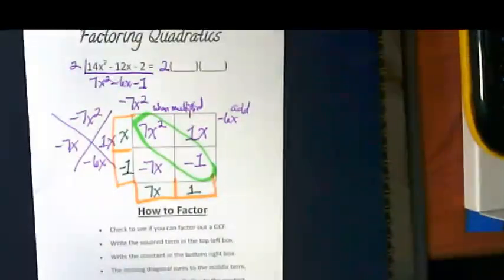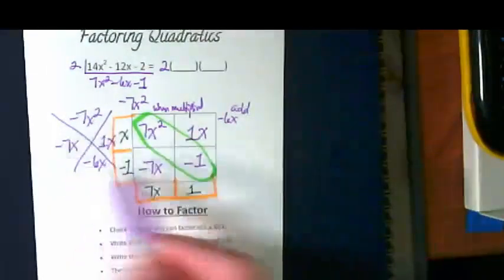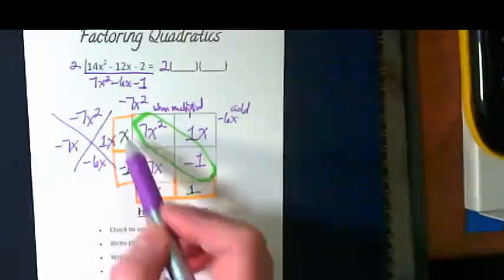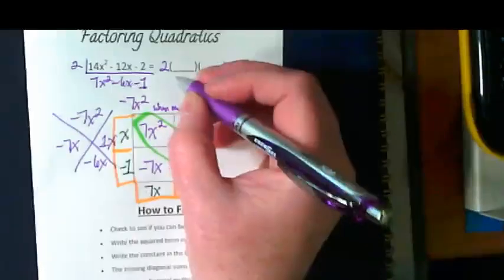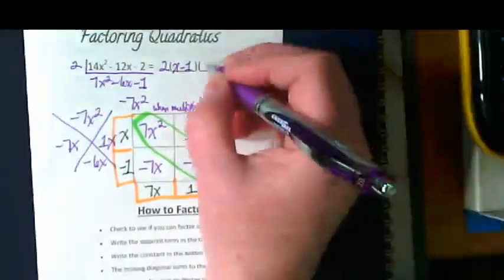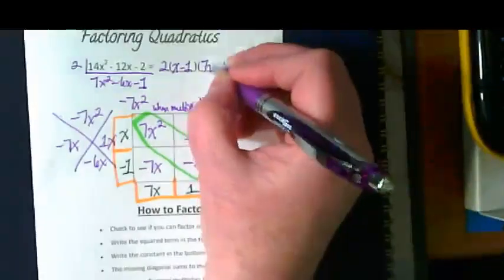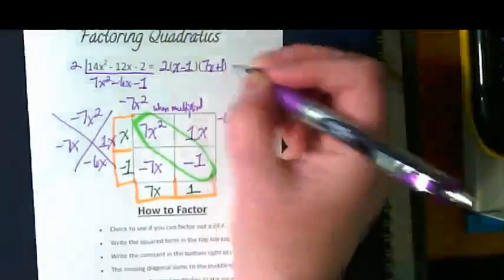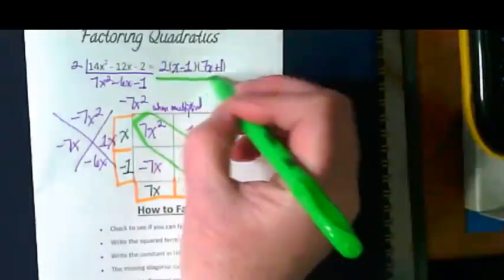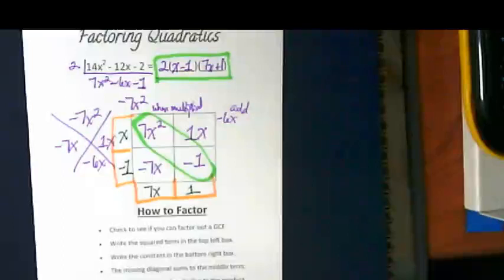What I've highlighted in the orange then is our answer. We're using the same idea of the x puzzle and the box method. But we're using it slightly differently this time. The x puzzle is helping us fill in the box. And then the box itself helps us puzzle out what is going to be out here. That means that the answer to this is x minus 1 and 7x plus 1 with that 2 in front.